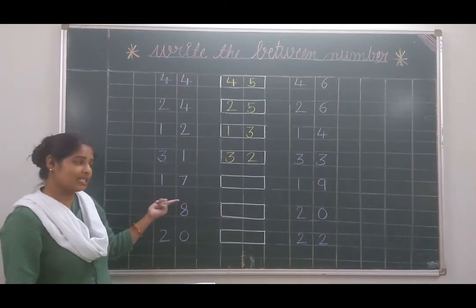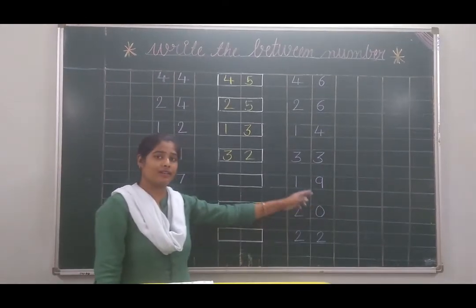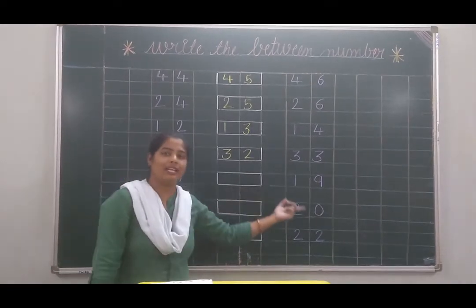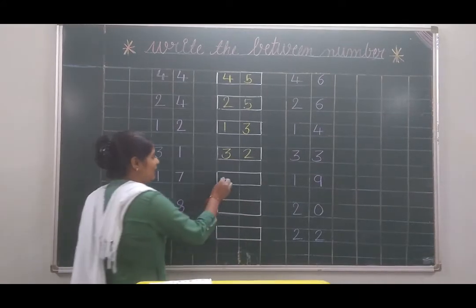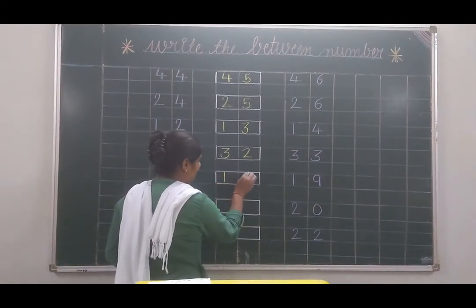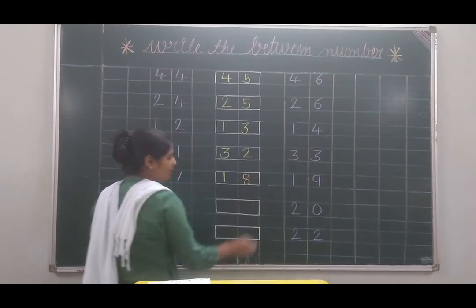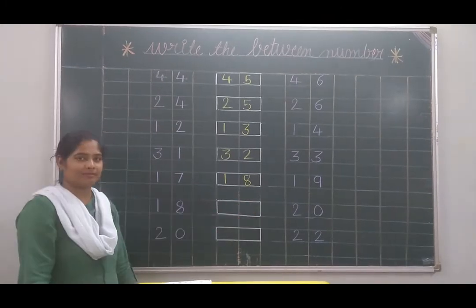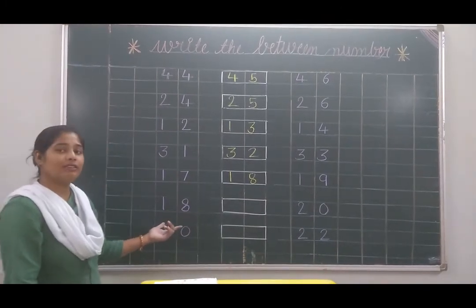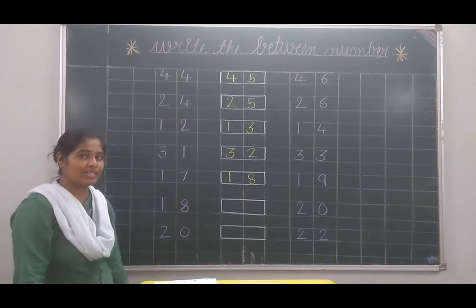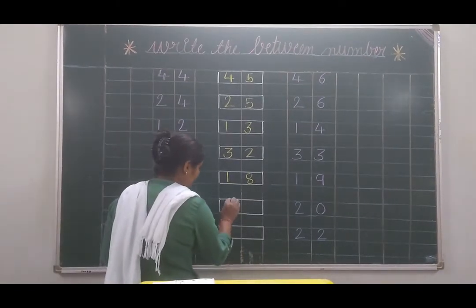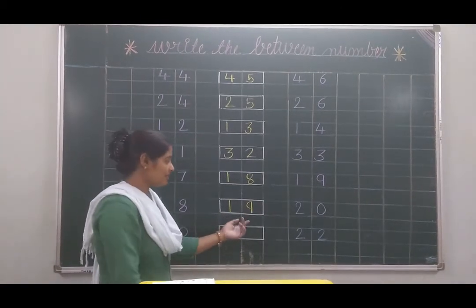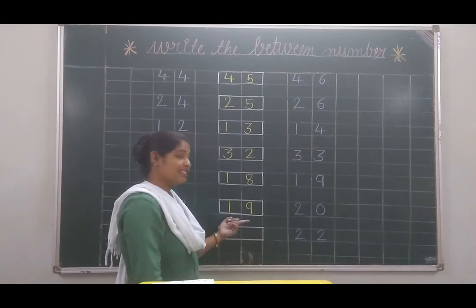Now here 17 is written. 19 is here. Now in middle the number is missing. 17, 18 and 19. Here we will write number 18 here. Now here 18 is 20. Now here 80. Which number comes after 18? 19. And which number comes before 20? 19?